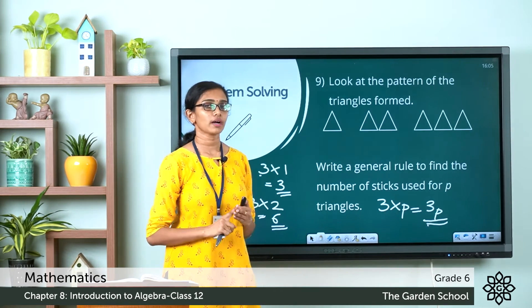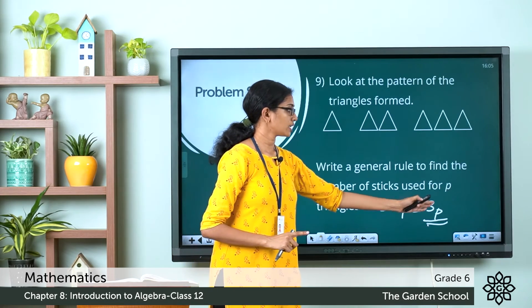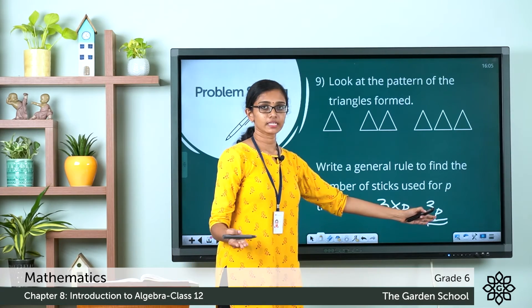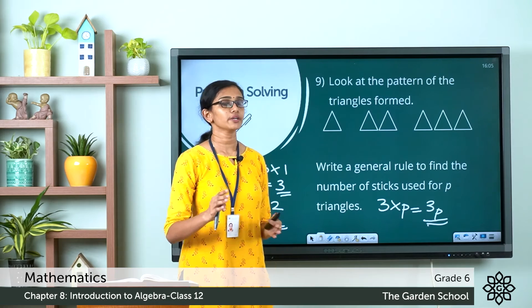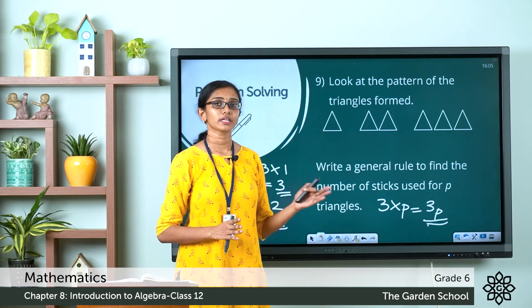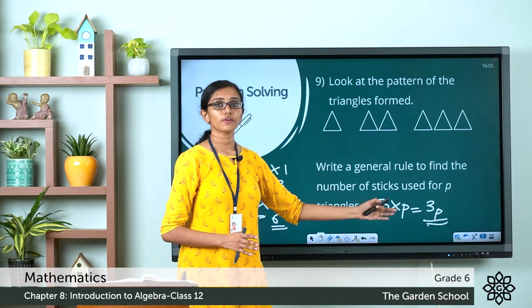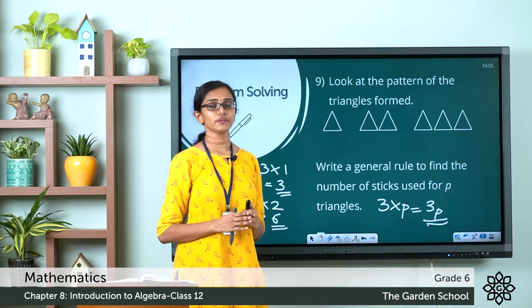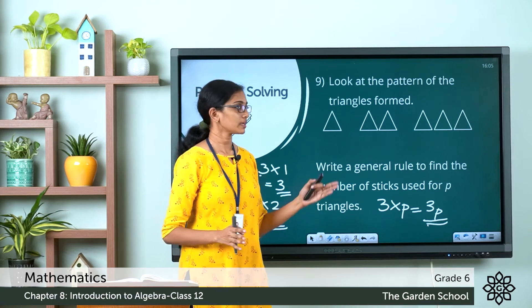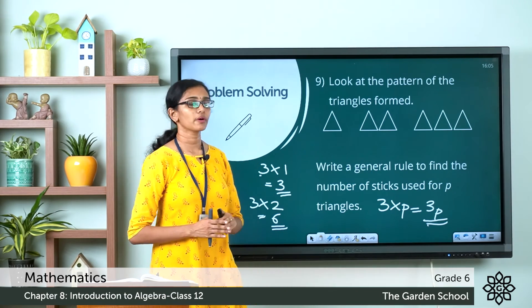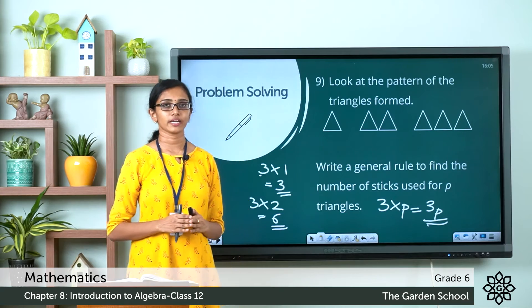For 1 triangle, where P equals 1, that is 3 into 1 equals 3. For 5 triangles, the number of sticks used equals 3 into 5 which is 15. Hence we found a general rule to find the number of sticks used for P triangles: the rule is 3P.